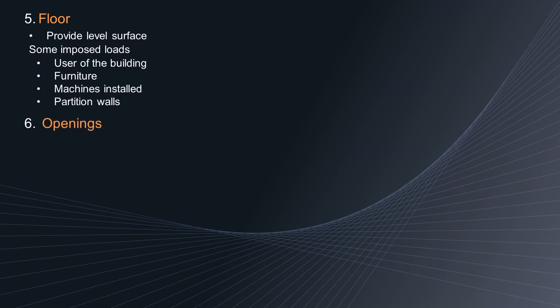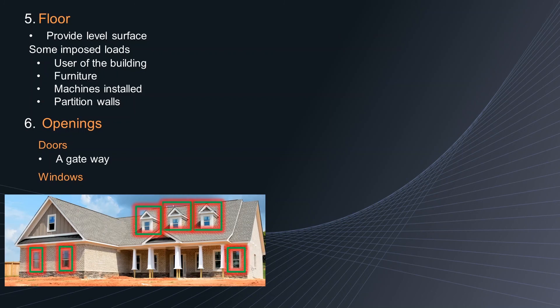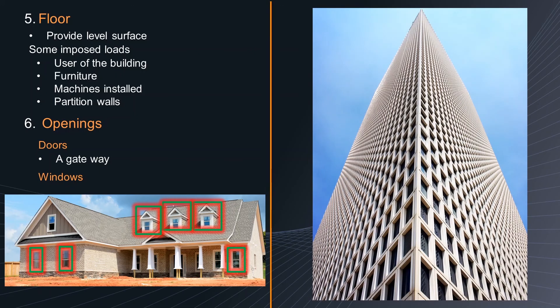Element 6: Openings. Openings in a building mainly address doors and windows. Doors are openable barriers attached to the wall and serve as the gateway between one room and another or from a corridor to a room. Windows are the other openable elements attached to walls and roofs. The primary function of windows is to provide light and ventilation for a room. Additionally, windows increase the aesthetic value of buildings.